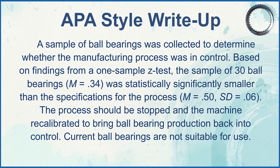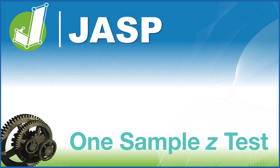Let's write this up in proper APA style. A sample of ball bearings was collected to determine whether the manufacturing process was in control. Based on findings from a one-sample z-test, the sample of 30 ball bearings with a mean of 0.34 was statistically significantly smaller than the specifications for the process, with a mean of 0.5 and a standard deviation of 0.06. The process should be stopped and the machine recalibrated to bring ball bearing production back into control. Current ball bearings are not suitable for use. And that is how we do a one-sample z-test using JASP. Thanks for watching, and be sure to check out the channel for other videos on statistical tests using JASP, SPSS, R, or Excel.